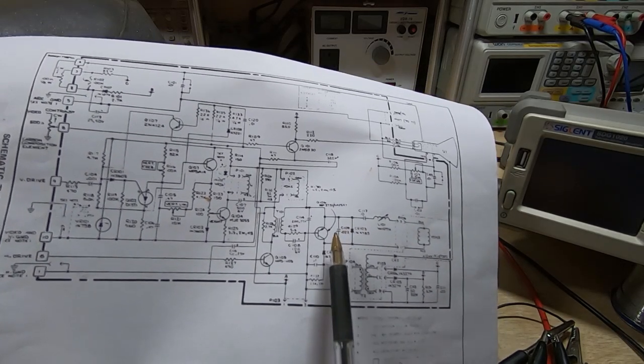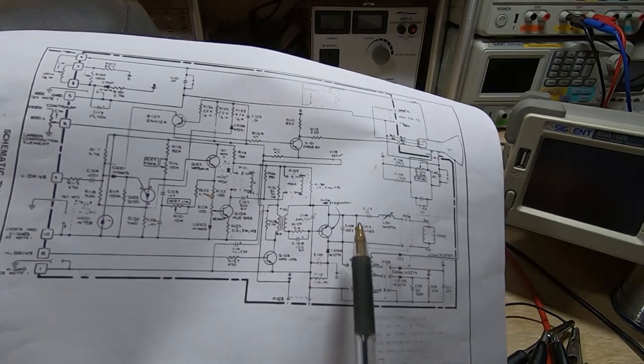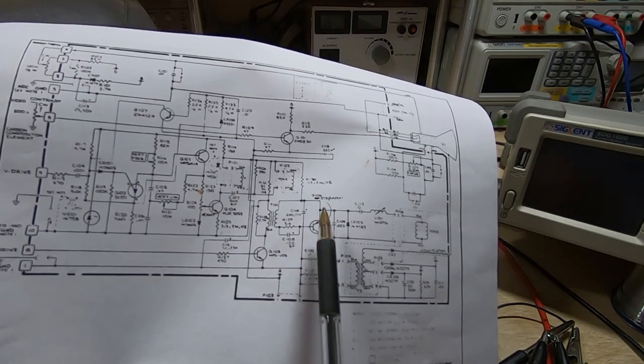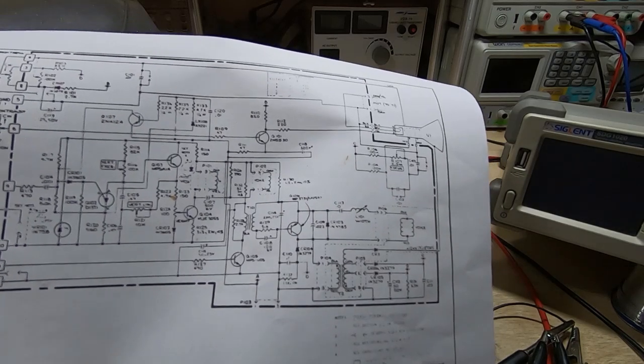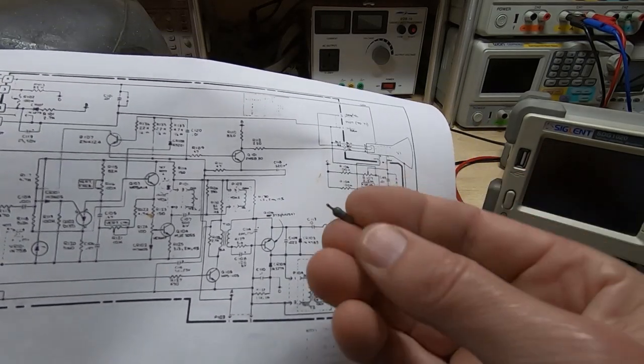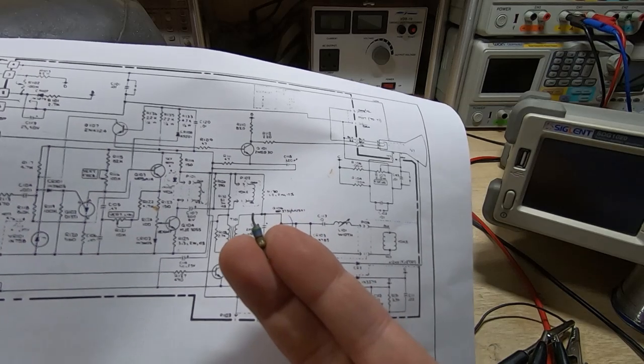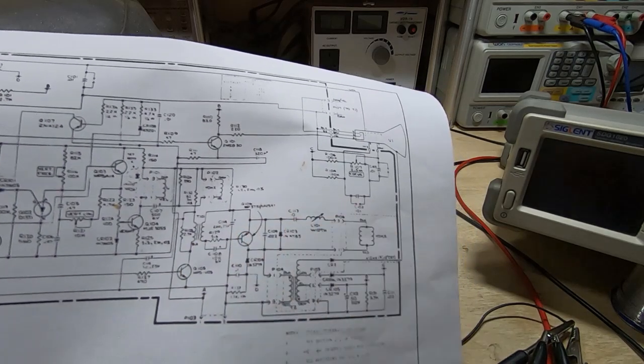And I've changed the value of the resistor that was driving this. Again, the value on the schematic didn't match the value that was on the actual board. It was a 56 ohm resistor that was on the board. I've changed that to 22 ohms.